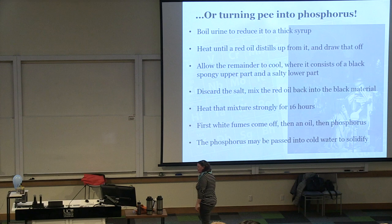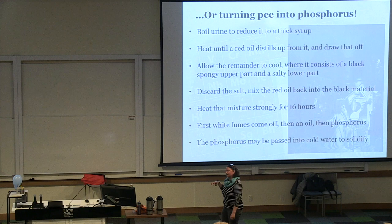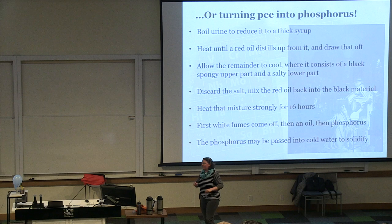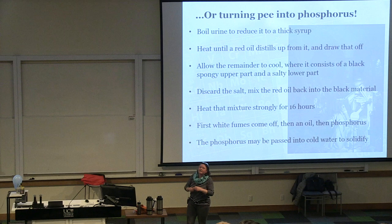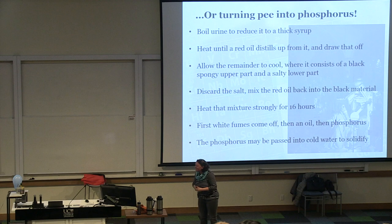What Brand was doing was turning pee into phosphorus. Here's his recipe: you take urine and boil it into a thick syrup. Then you heat it up until a red oil distills off — take that off — then let it cool down to get a black spongy upper layer and a white salty layer underneath. He discarded the salt. He put the red oil back into the black material and heated it strongly for 16 hours. Remember, he's boiling up urine to start with, so it really wouldn't have smelt great. Then white fumes come off, then an oil, then phosphorus — put that into cold water to solidify it.